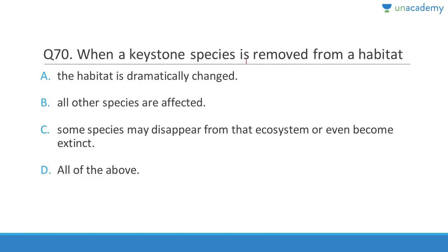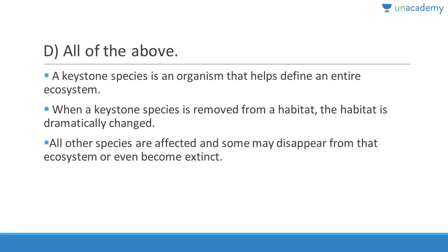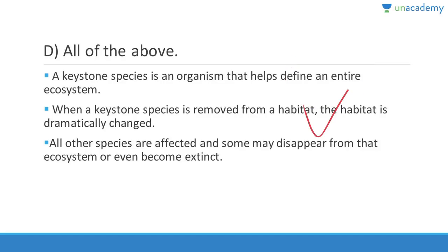Question 70: When a keystone species is removed from a habitat, the habitat is dramatically changed, all the other species are affected, and some species may disappear or even become extinct — all these are correct. Answer is D, all of the above. A keystone species is an organism that helps define an entire ecosystem; when it is removed, the habitat dramatically changes and some species can even go extinct.